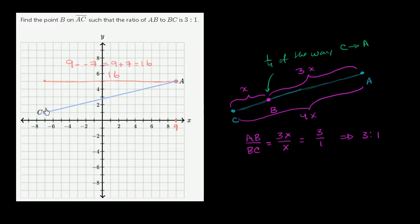And the vertical change, you could even just count that, is going to be 4. C is at 1, A is at 5, going from 1 to 5. You've changed vertically 4.